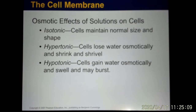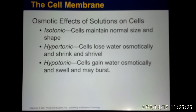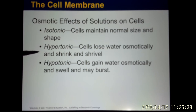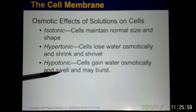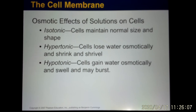Different solutions affect osmosis differently. If you put a red blood cell into a solution and it maintains its normal shape, that is an isotonic solution. If the cell shrinks or crenates, the solution concentration is too high — that is a hypertonic solution, which makes the cell shrink. If the cell swells or sometimes bursts — a process called hemolysis — the solution concentration is too low — that is a hypotonic solution, which makes the cell swell and burst.